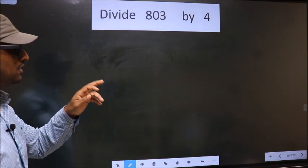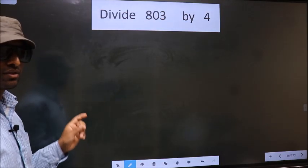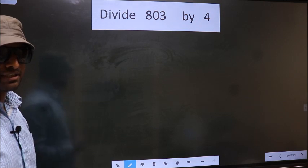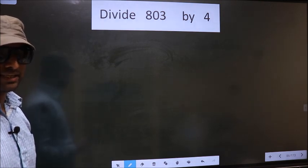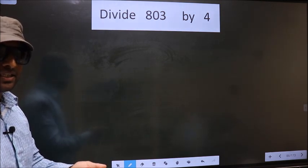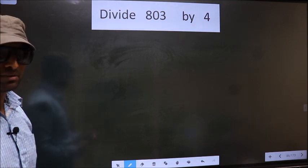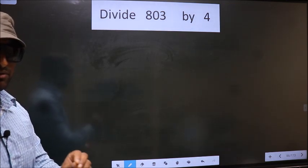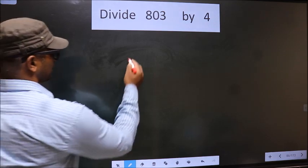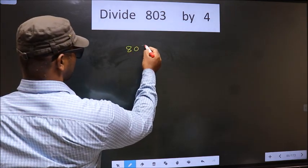Divide 803 by 4. While doing this division, many do this mistake. What is the mistake that they do? I will let you know, but before that we should frame it in this way: 803.